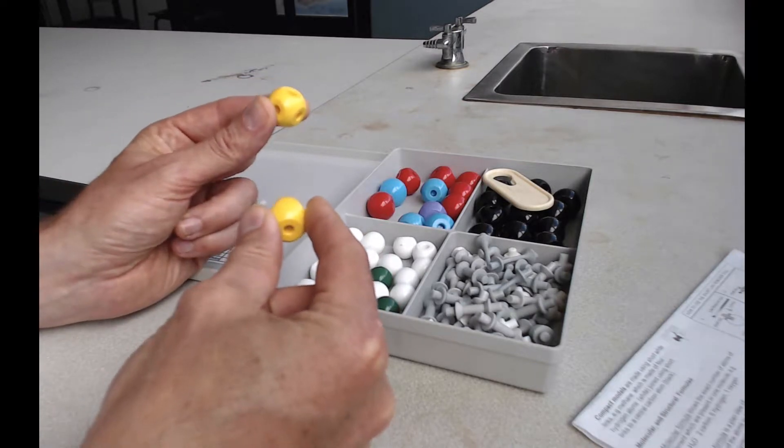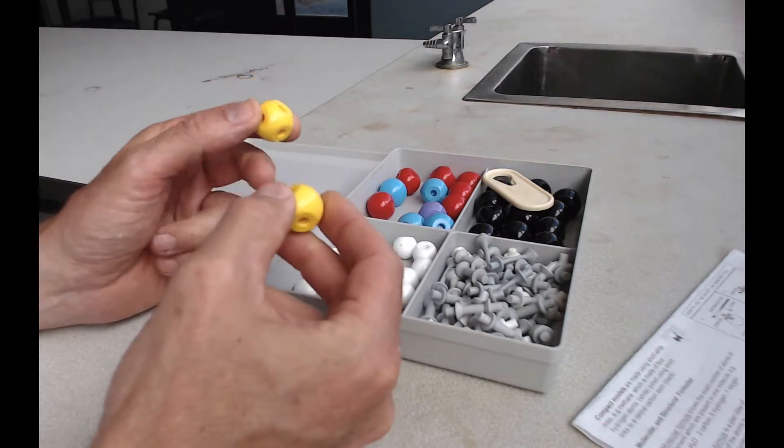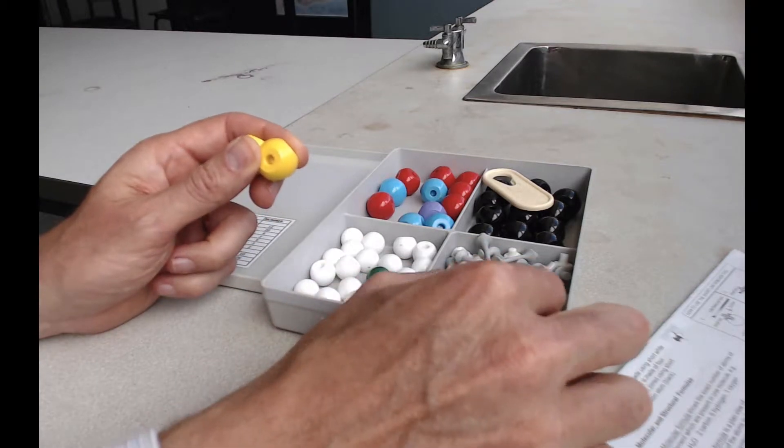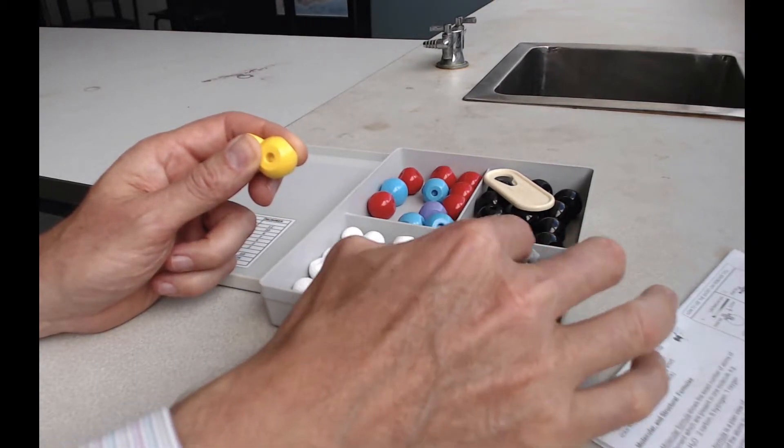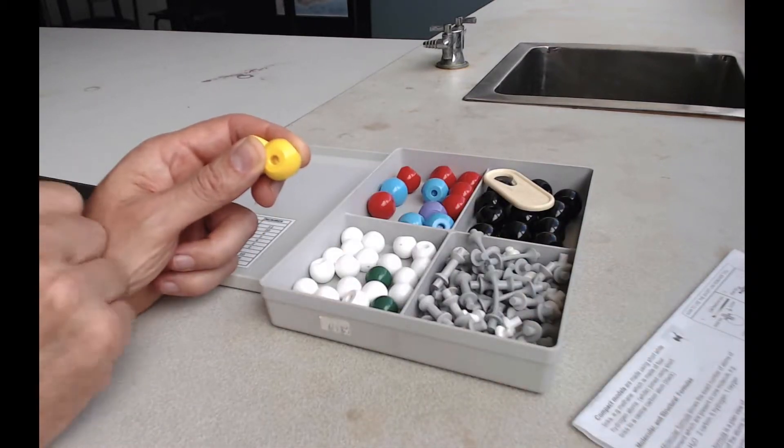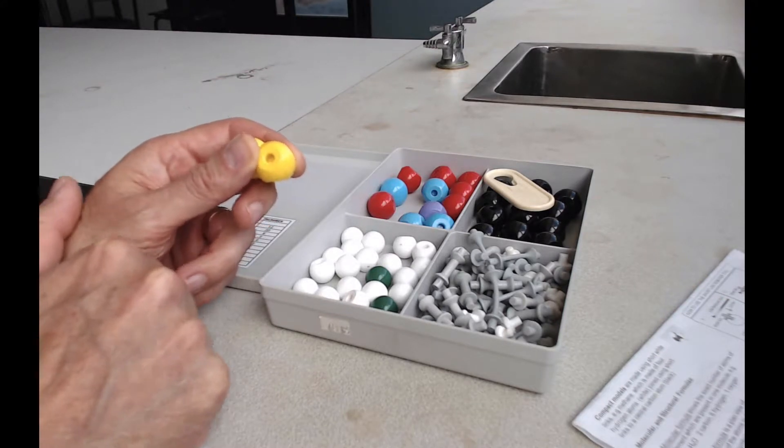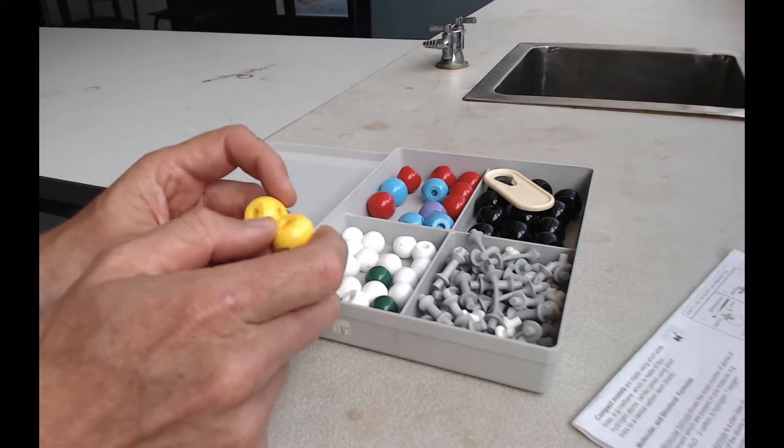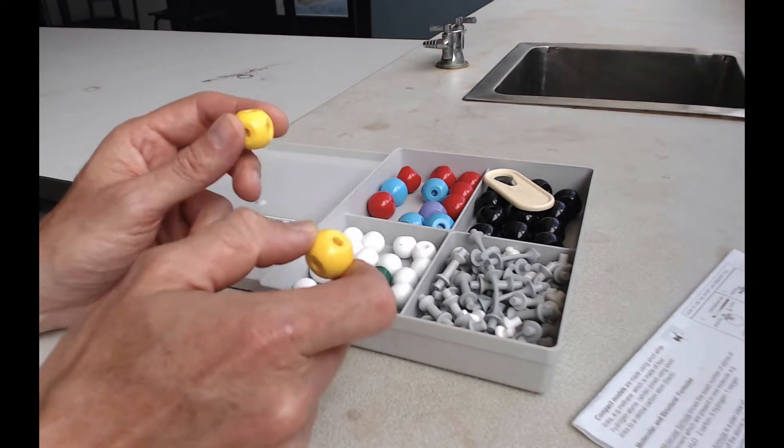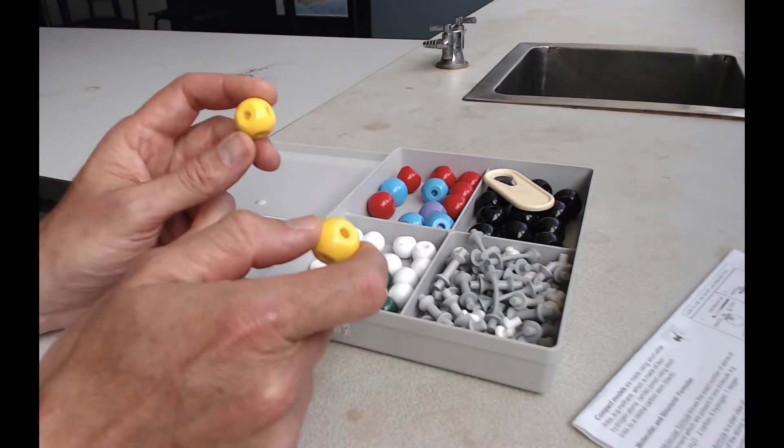So there's two sulfur atoms, how do I know they're sulfur atoms? Well because they're yellow. And we've got different types of sticks that we can join them together with, so they are our covalent bonds and because we're going to be trying to build different kinds of bonds and different kinds of molecules we'll need single, double and sometimes triple bonds.